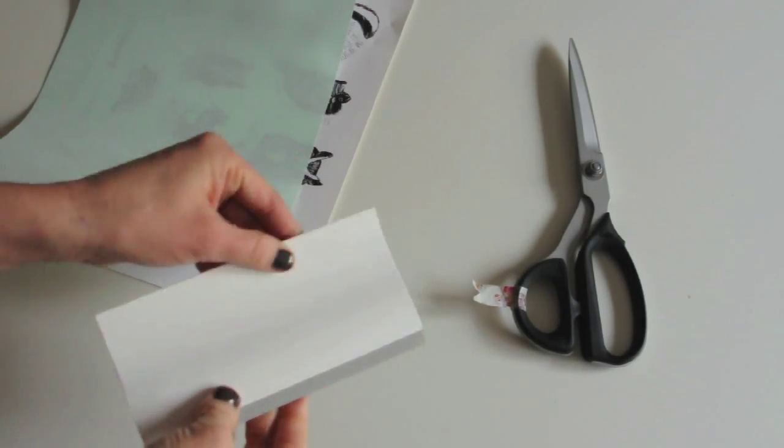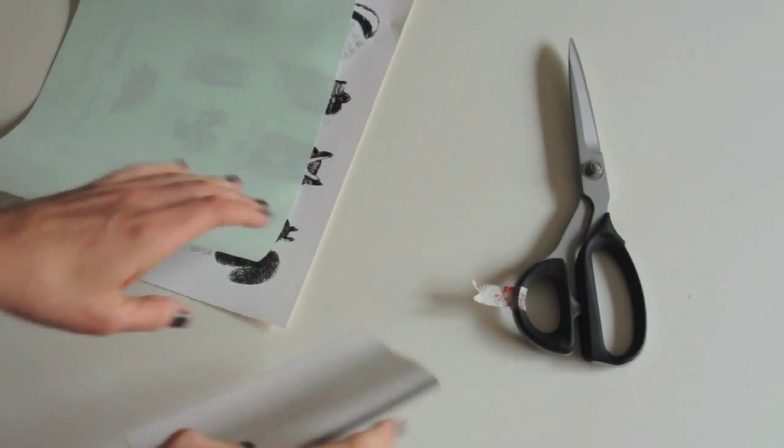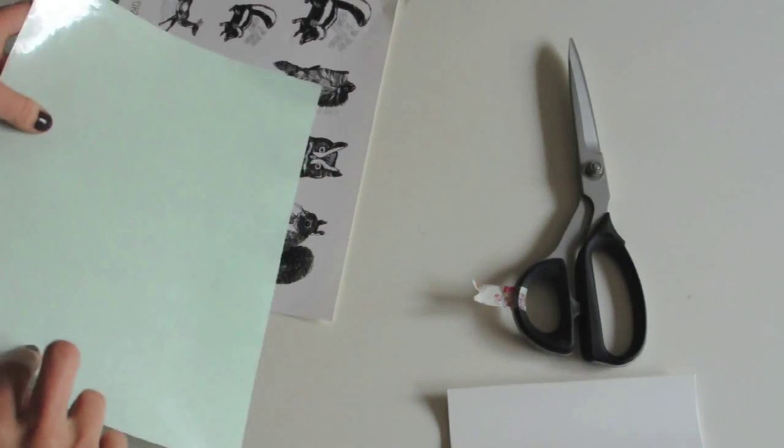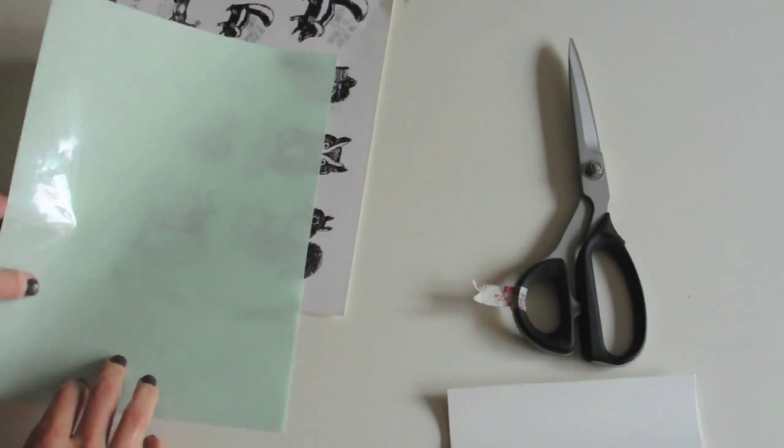What you'll need is some sort of a scraper, something that you can really scrape down on, scissors, and then temporary tattoo paper. I bought this off of Amazon, and the link is provided in my post.